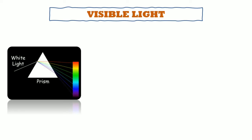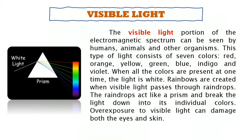Next is visible light. The visible light portion of the electromagnetic spectrum can be seen by humans, animals, and other organisms. It consists of seven colors: red, orange, yellow, green, blue, indigo, and violet. When all colors are present at one time, the light is white. Rainbows are created when visible light passes through raindrops, which act like a prism and break the light into its individual colors. Overexposure to visible light can damage both the eyes and skin.